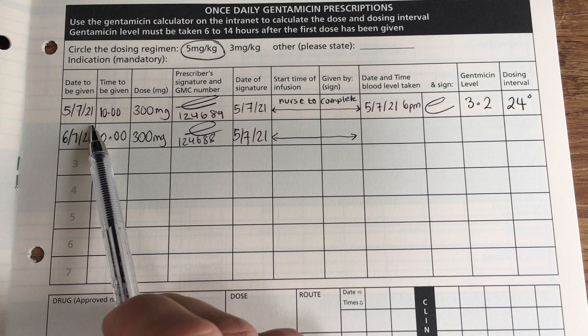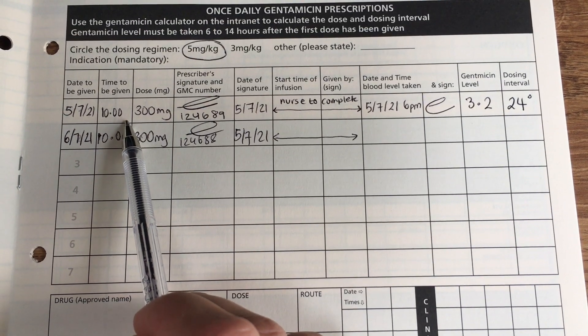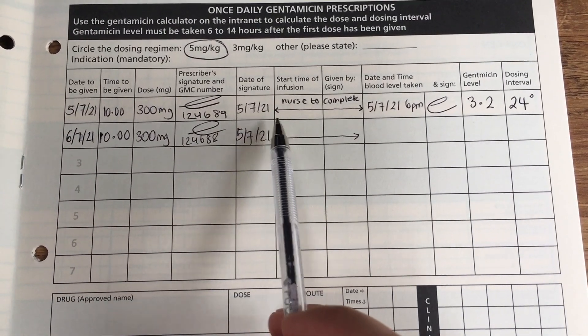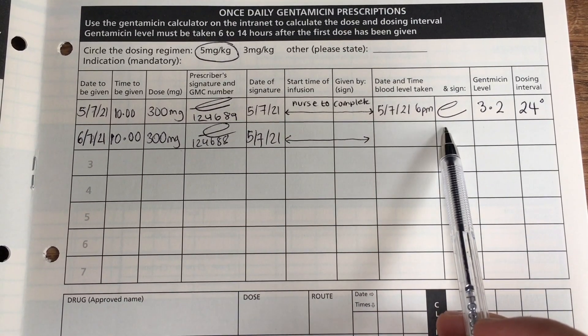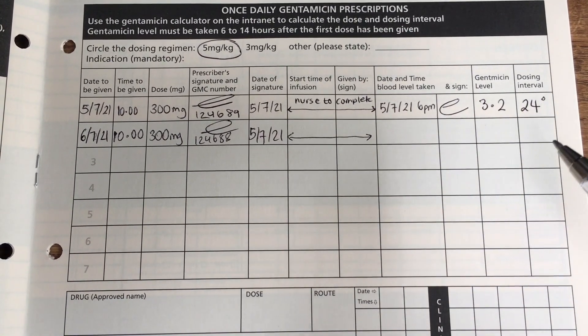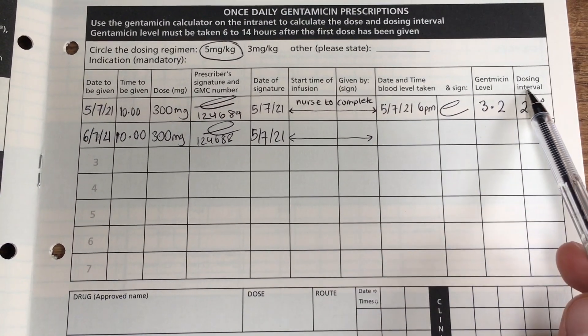So, either 5 or 3 milligrams per kilo. Then you will have the date that the drug is given, as well as the time. The dose, which I'll show you how to calculate, and the prescriber's GMC and signature. This section is completed by the nurses when the drug is actually given to the patient. The next bit is the gentamicin level, and this level, so 3.2, is how much gentamicin there is in the patient's body. And you get that from the blood test.